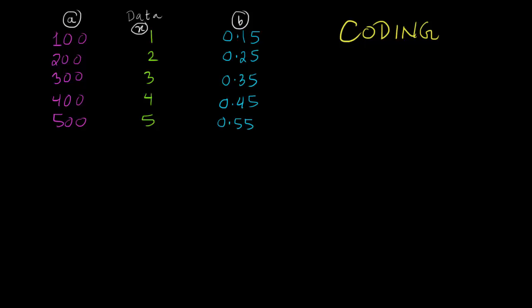Coding is a way of making data more manageable, more user-friendly. What happens is that suppose we have big data like 100, 200, 300, 400, 500 or small data like 0.15, 0.25, 0.35, and so on.